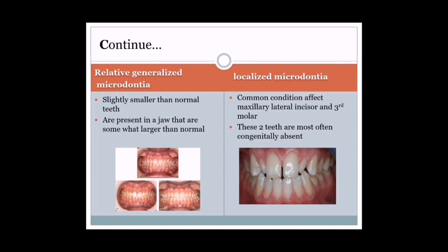Number two: relative generalized microdontia, in which slightly smaller than normal teeth are present in a jaw that is somewhat larger than normal. Number three: localized microdontia is a common condition affecting the maxillary lateral incisor and third molar — these two teeth are most often congenitally absent. A picture shows the peg lateral, which is an example of localized microdontia.